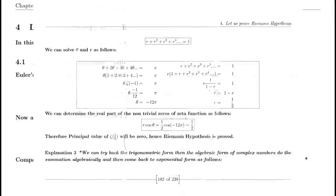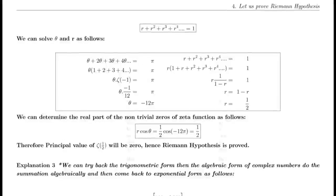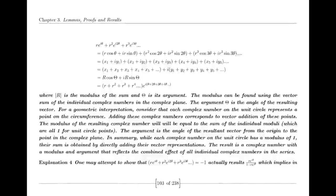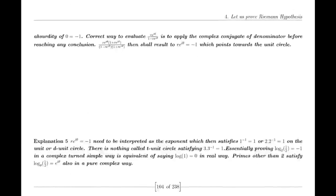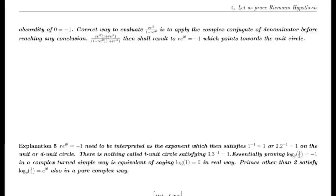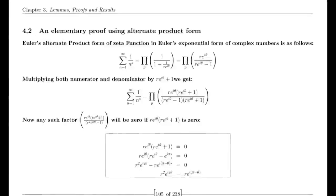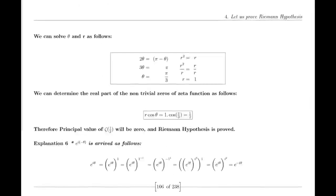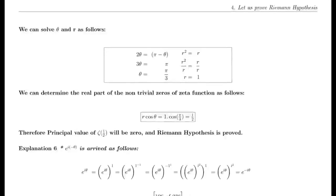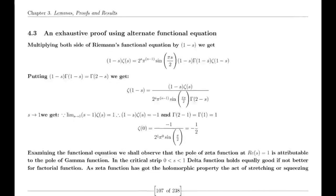You might have heard the story of the young Carl Friedrich Gauss, who, when asked to sum the first 100 numbers, gave the correct answer in just seconds. Remember this boy Gauss, who was playing with prime numbers and went on to come up with the prime number theorem. The theorem describes the asymptotic distribution of prime numbers and was a major milestone in number theory. Gauss's work laid the groundwork for many important mathematical discoveries, including the Riemann hypothesis.